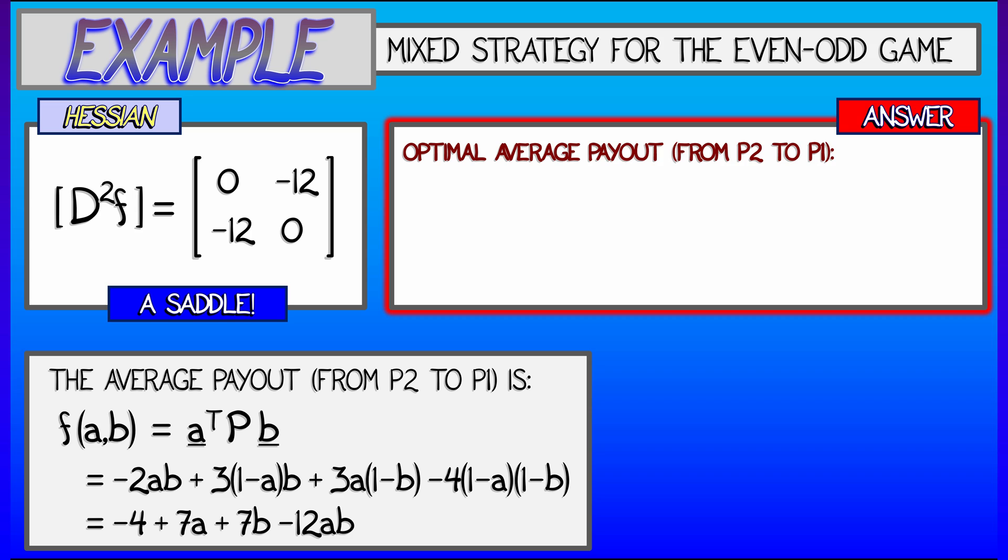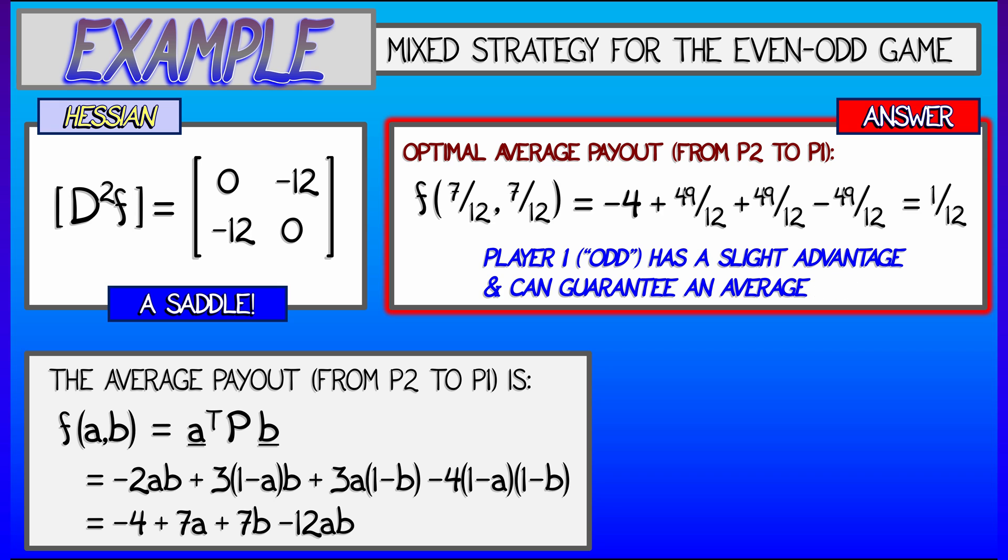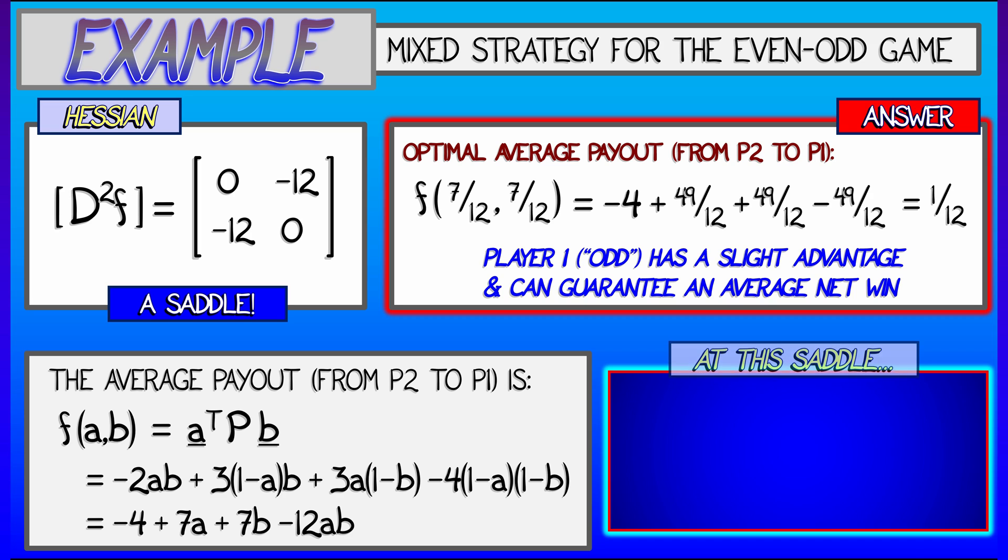So, we can now get our final answer. The optimal average payout from player two to player one is the value of this function at A equals 7 twelfths and B equals 7 twelfths. Plug in those numbers into the formula, do some unfortunate fractions and you get a very cool number. This number is 1 twelfth. This means that player one odd has a slight advantage and can guarantee a net average win of 1 twelfth at this optimum.